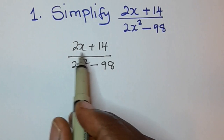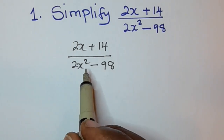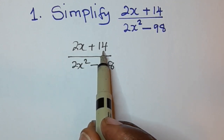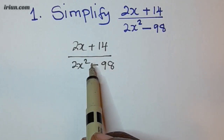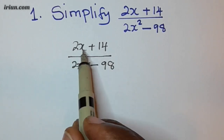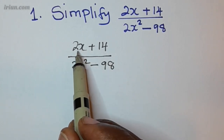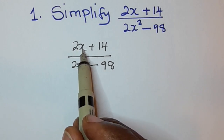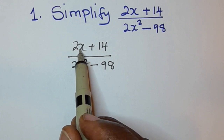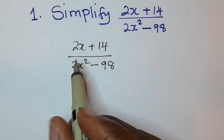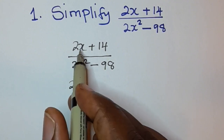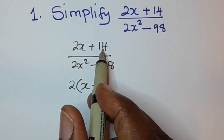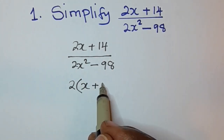To simplify a fractional algebraic expression, first of all you need to look at the numerator and see if there's anything that you can factorize. When you look at the numerator here, 2 can be factorized because it's common in both terms. So we have 2: 2x divided by 2 will remain with x, then plus 14 divided by 2 is 7.